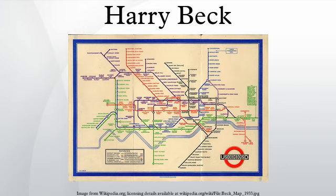Henry Charles Beck, known as Harry Beck, was an English technical draftsman best known for creating the present London Underground tube map in 1931. Beck drew up the diagram in his spare time while working as an engineering draftsman at the London Underground Signals Office. London Underground was initially skeptical of Beck's radical proposal — an uncommissioned spare time project — but tentatively introduced it to the public in a small pamphlet in 1933. It was immediately popular, and the Underground has used topological maps to illustrate the network ever since.